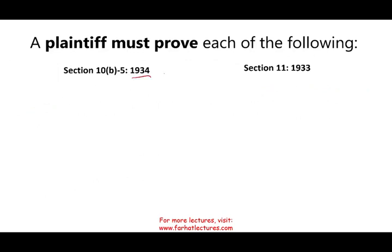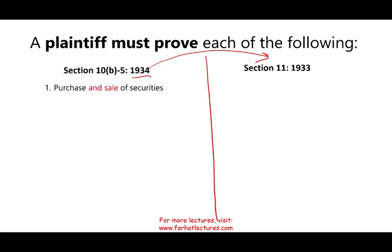So what should the plaintiff prove for Rule 10B-5 under the 1934 Act? After I go through these rules, I'm going to show you the 1933 Section 11 that we looked at in the prior session — on the exam they try to trick you, and you need to know the difference between the two. The first thing the plaintiff must prove is that they purchased or sold the security. Notice I put 'sale' because under Section 11 it's only if you purchase.